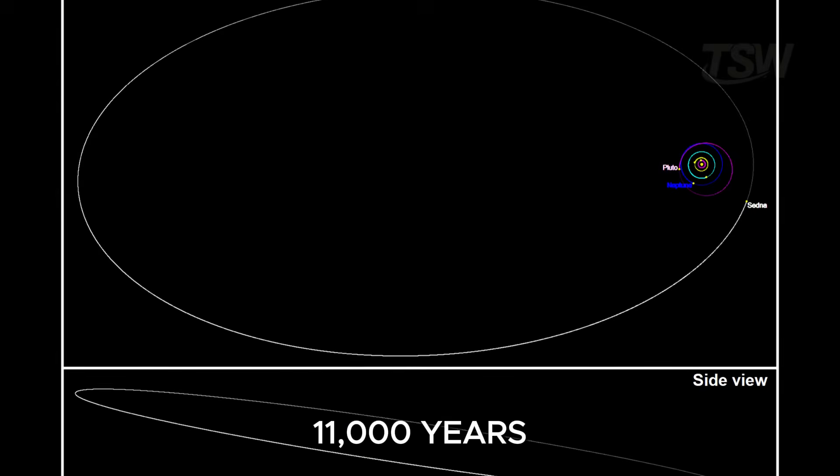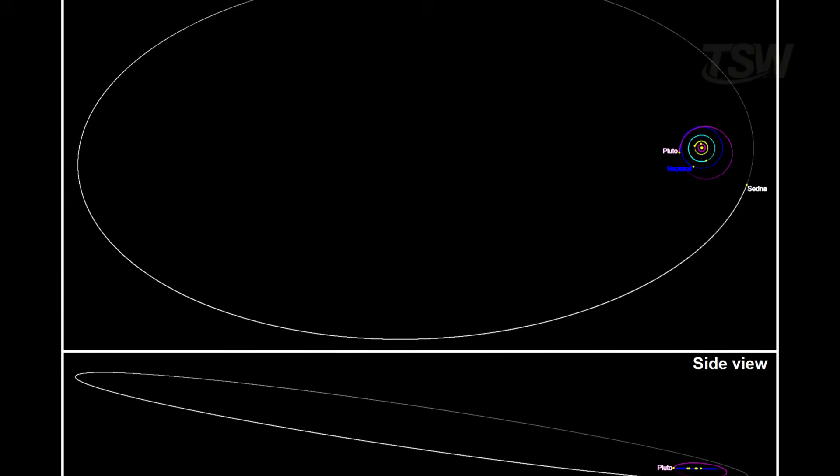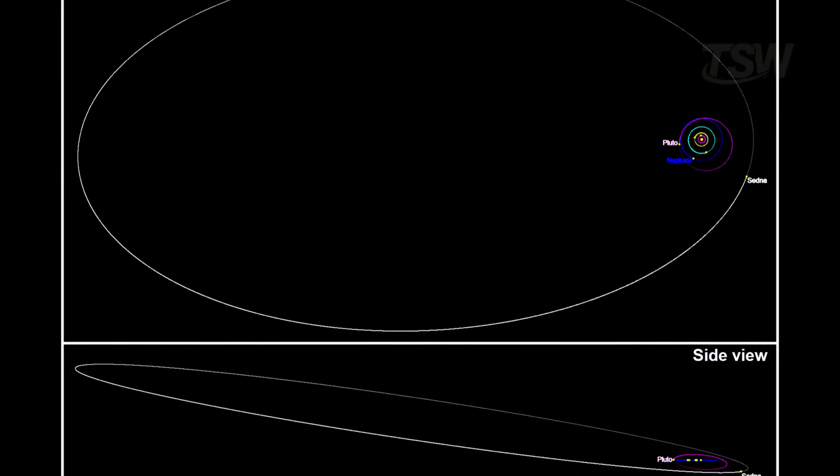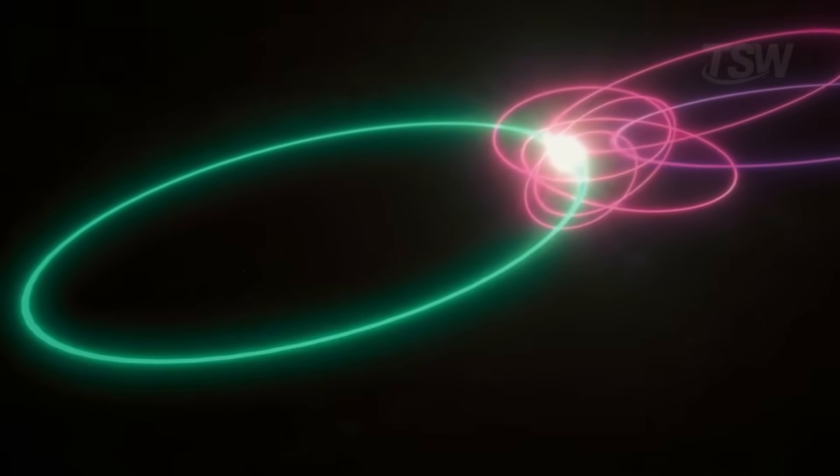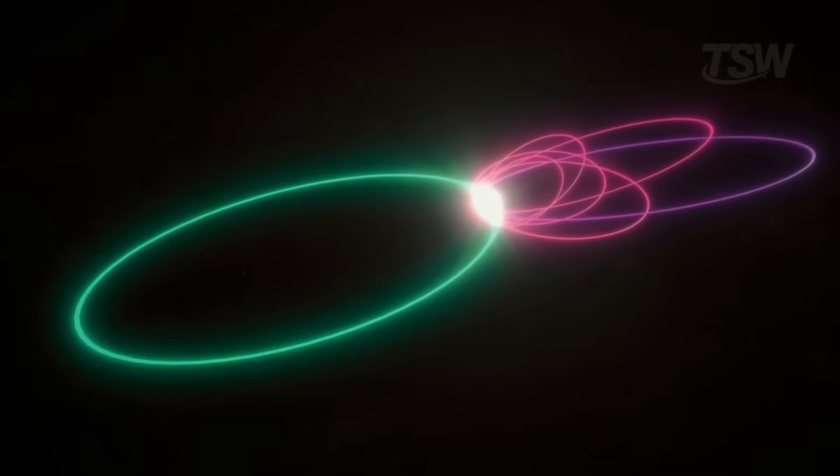Yes, 11,000 years. For most of that time, it stays so far away that it becomes invisible, even to the most powerful telescopes. Sedna's unusual trajectory raises a lot of questions. What sent it into such an extreme orbit? And what else might be hiding in that vastness?